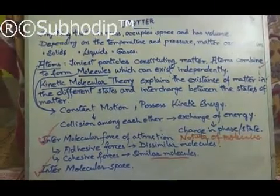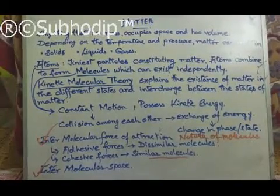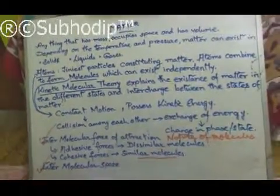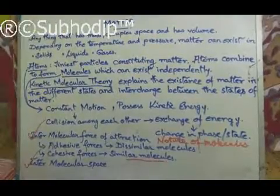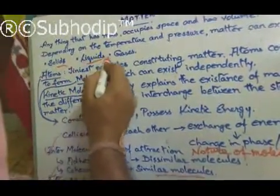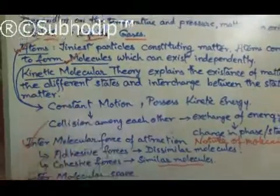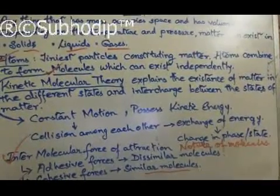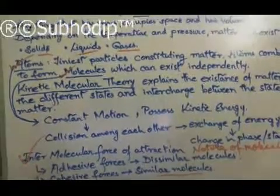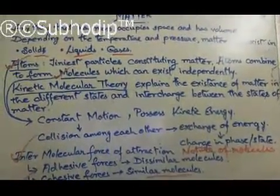Talking about matter, we come to know that anything that has mass, occupies space and has volume can be called as matter. Depending on the temperature and pressure conditions, matter can exist in three states namely solids, liquids and gases. We also know that atoms and molecules are the constituting particles of matter. Atoms are the tiniest particles constituting matter but they cannot exist independently — they combine to form molecules, which can exist independently.